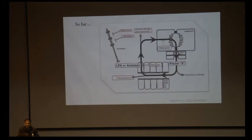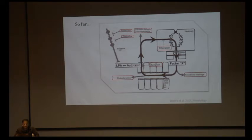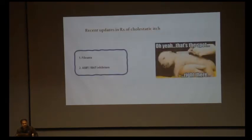In summary, effective drugs so far include cholestyramine as a binder, rifampicin as an enzyme inducer, nasobiliary drainage, albumin dialysis, plasmapheresis, naltrexone, and sertraline — acting on the neuron level. This is what has been practiced for decades. Currently in the last decade, two interesting updates have emerged: fibrates and apical sodium-dependent bile acid transporter (ASBT) or ileal bile acid transporter (IBAT) inhibitors — both synonymous.